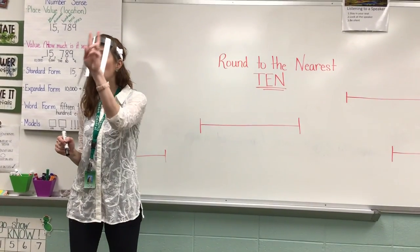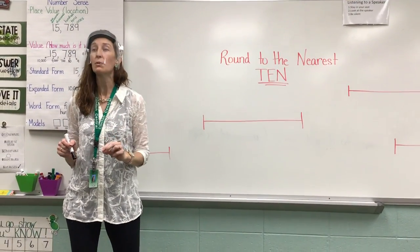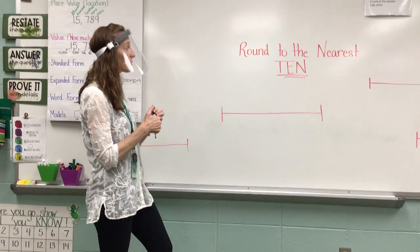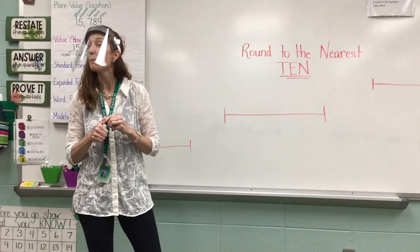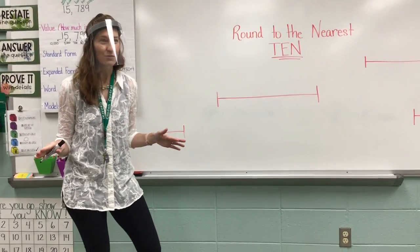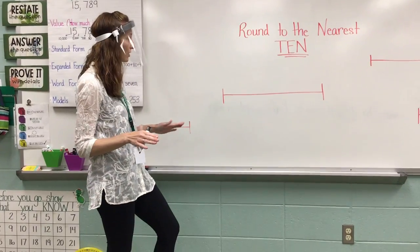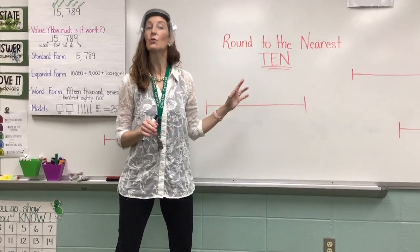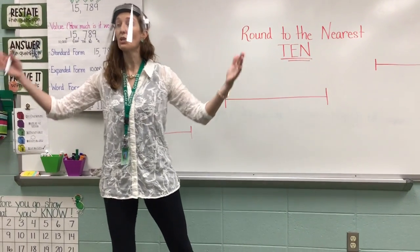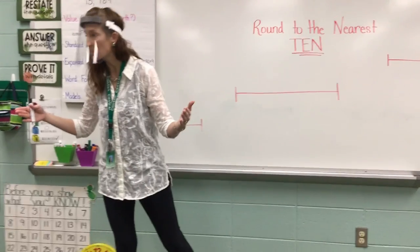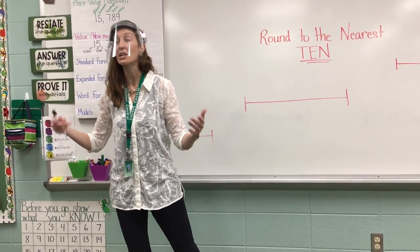Today we're rounding to the nearest ten. I'm going to give you two different strategies and you get to pick the one that works best. Step number one is we're going to use what's called a number line, a racing number line. You've seen number lines forever since you were probably in kindergarten. But this time when we round to the nearest ten, our number line is always going to start with only two numbers on it, and those are multiples of ten. So we're going to count by ten to make sure we know how to count by ten.